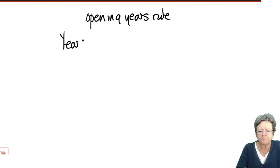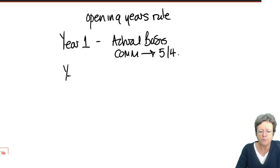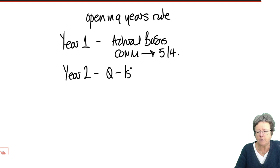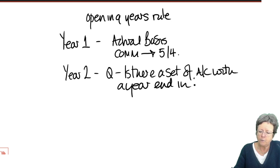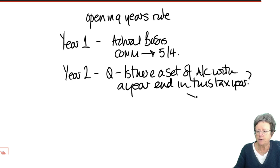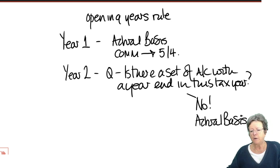Year 1 is an actual basis from commencement to the next 5th of April. For Year 2, we ask: is there a set of accounts for the year-end in this tax year? Sometimes the answer was no, in which case the rule would be an actual basis — we looked at an example of how that works.